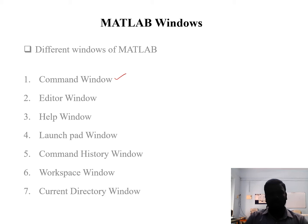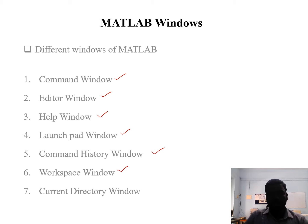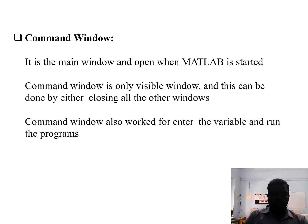MATLAB has several different windows: the first one is the Command Window, second is the Editor Window, third is the Help Window, fourth is the Launchpad Window, fifth is the Command History Window, sixth is the Workspace Window, and seventh is the Current Directory Window.